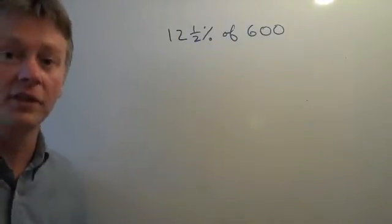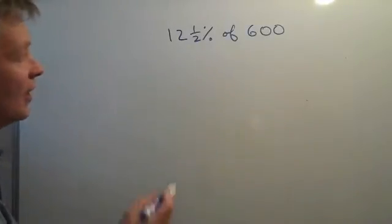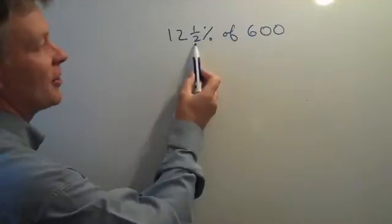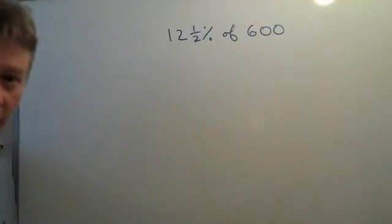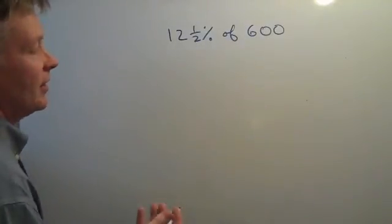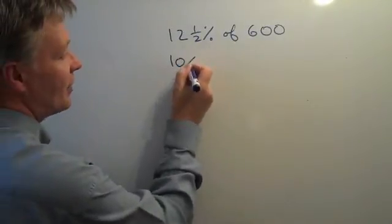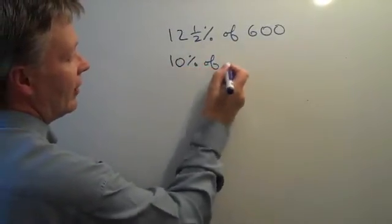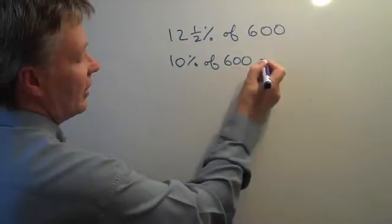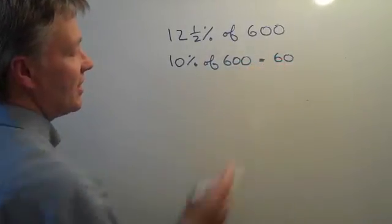However, with this particular one, one of the ways we can do it is to say that 10% of 600 equals 60.